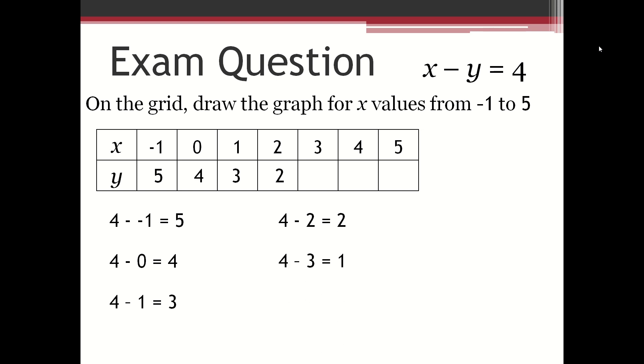4 minus 3 is equal to 1. 4 minus 4 is equal to 0. And 4 minus 5 is equal to minus 1.